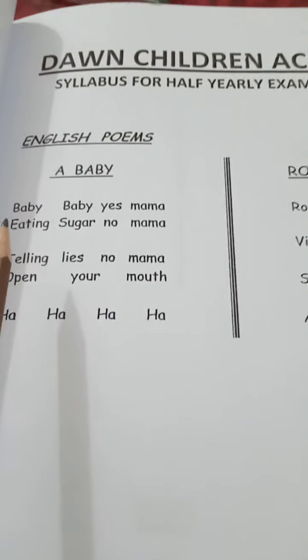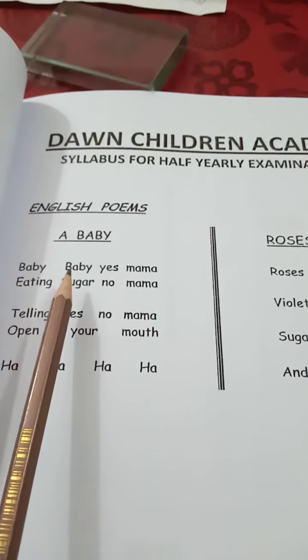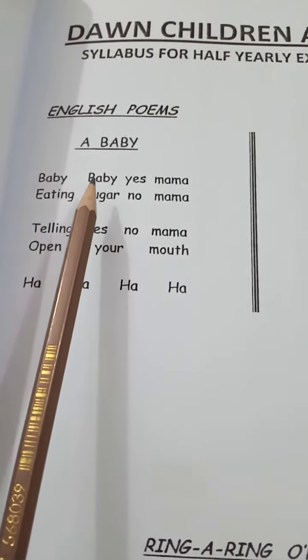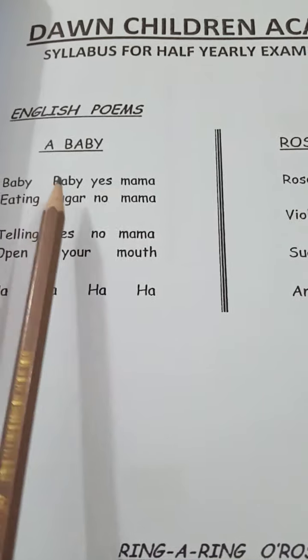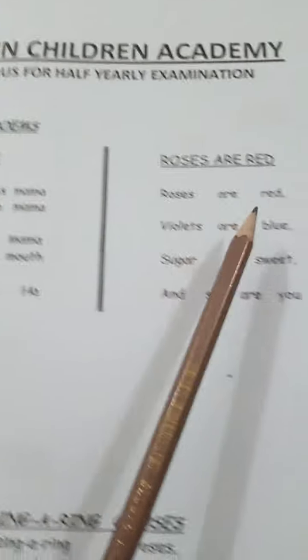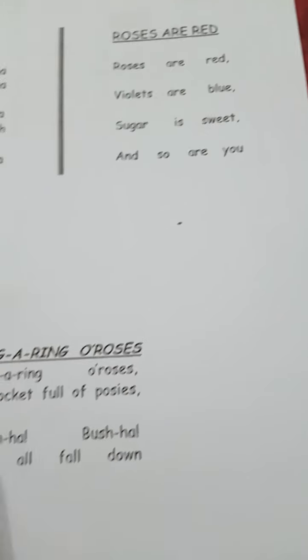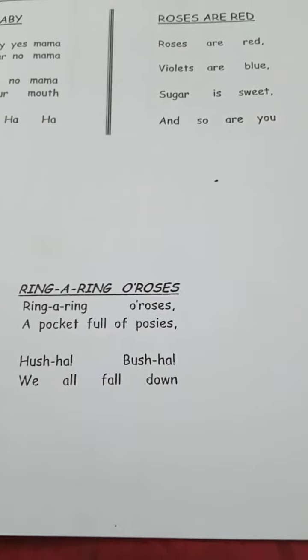Students, learn these three poems as homework at home: A Baby, Roses Are Red, and Ring Around the Roses.